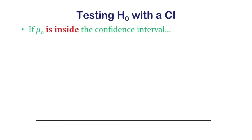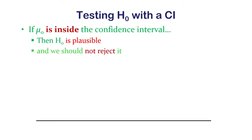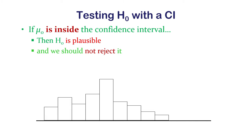If mu sub zero — the null hypothesis implied mean — is inside the confidence interval, then it's in the range of plausible values for the true population mean. The true population mean might be the null hypothesis mean, so we should not reject the null hypothesis. We've got our sample, our confidence interval, and we do the sampling distribution of the mean to calculate it.